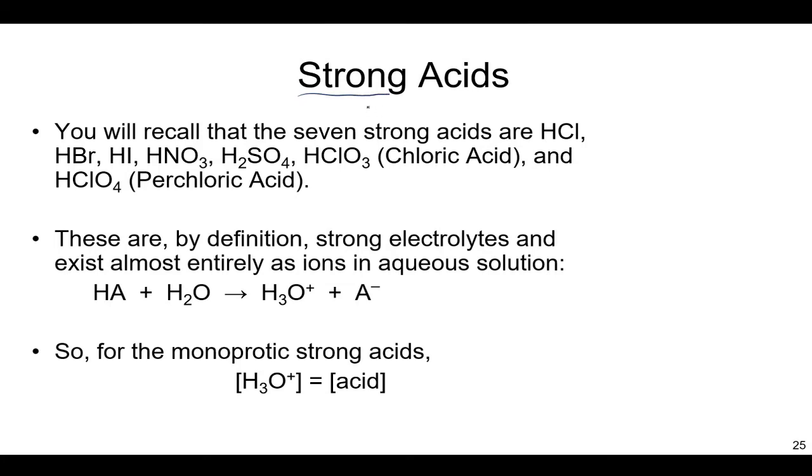So you should remember from previous chemistry courses that there's seven strong acids. We're going to define exactly what strong means, but these strong acids are HCl (hydrochloric), HBr (hydrobromic), HI, HNO3 (nitric), H2SO4 (sulfuric), HClO3 (chloric), and HClO4 (perchloric acid).